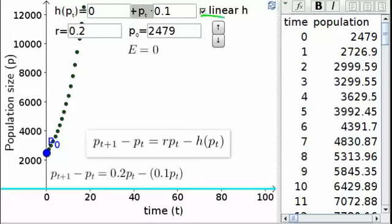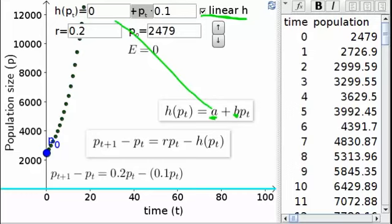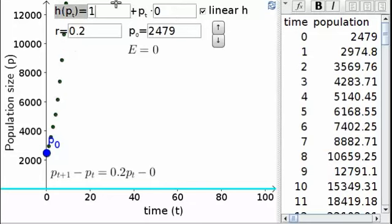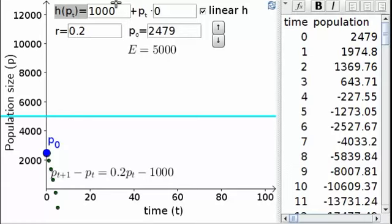When the linear h box is checked, harvesting rate is a linear function of population size. We can write this linear function as a constant a plus b times the current population size. The values of a and b are determined by the numbers in these boxes. If we make b 0 and a non-zero, then a fixed number of individuals are harvested in each time period.